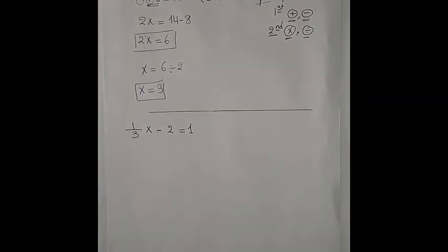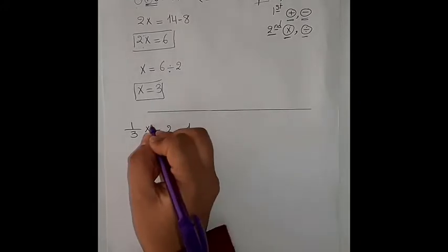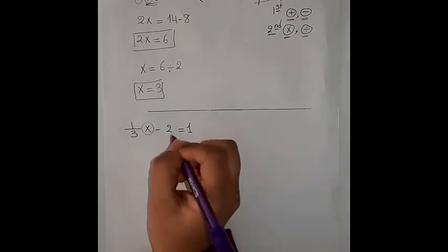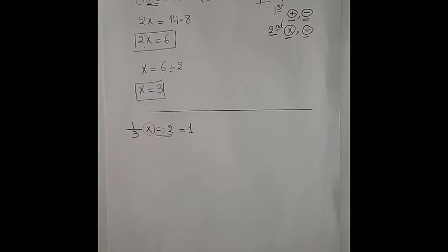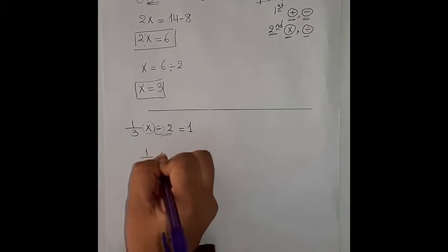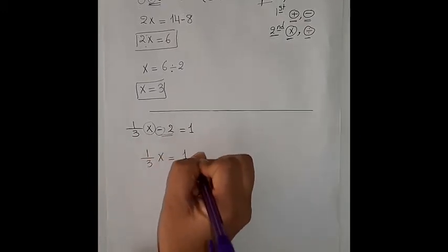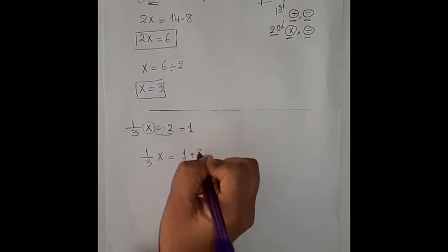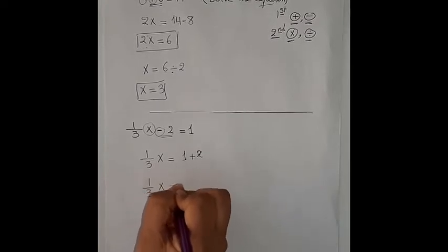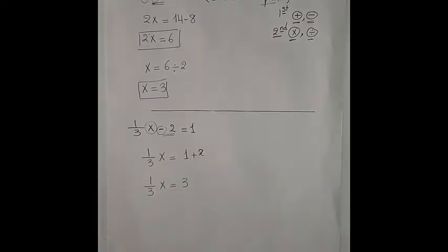We need to solve the equation and get the value of x. To get the value of x we have to move away its neighbor, which is 2. The sign of 2 is subtraction, so we will move 2 to the next side with an inverse operation, which is addition. So we have ⅓x equals 1 plus 2, which gives ⅓x equals 3.